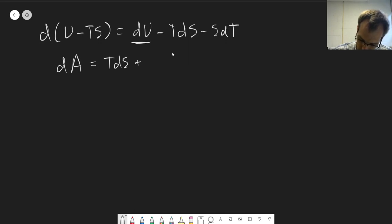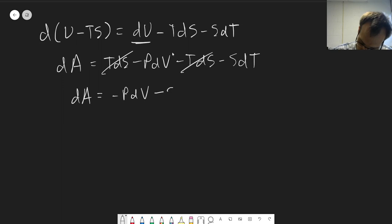So it's tds minus pdv minus tds minus sdt. And we're going to have the positive tds, negative tds terms cancel out. And so we can say dA is equal to minus pdv minus sdt.